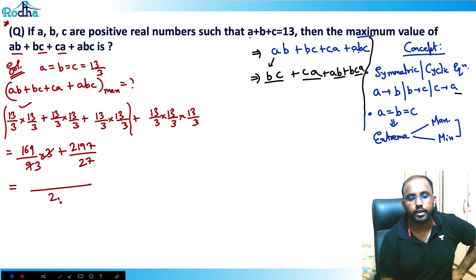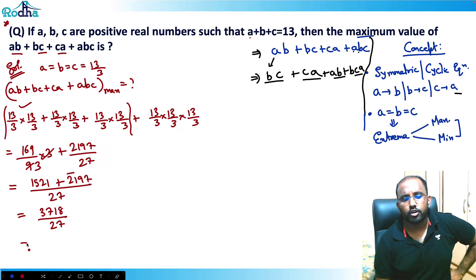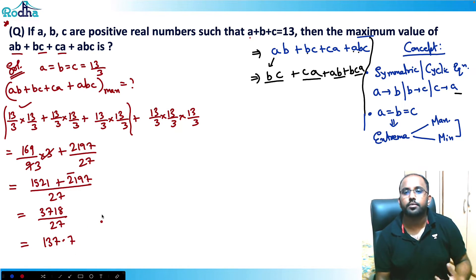This will be cancelled 3 times, so I can take 27 as the LCM. Now 169 into 9 is 1521 plus 2197. This is equal to 2197 plus 1521 equals 3718 upon 27. If I solve it, I'll be getting the value as 137.7 roughly, around six or seven like that, more than 0.5.